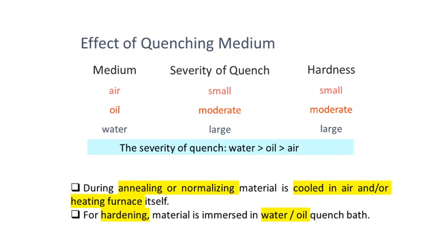An important factor in the heat treatment process is the medium of quenching. The quenching process is the cooling process — how quickly and at what cooling rate we are cooling the material. This determines the properties as well as the structure and phases of the steel. The commonly used quenching mediums are air, oil, water, and the furnace itself. Air has a comparatively slower severity of quench, so the hardness obtained using air is small.